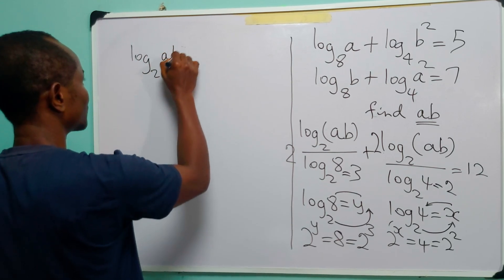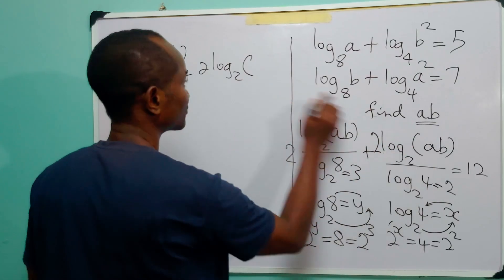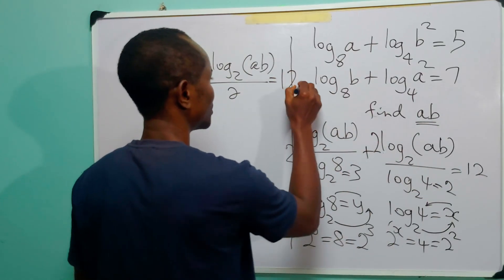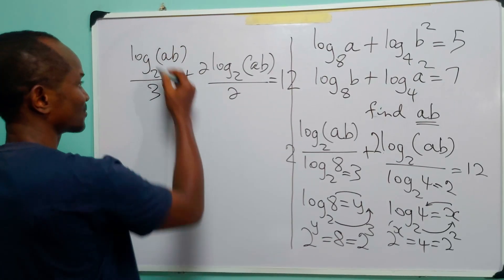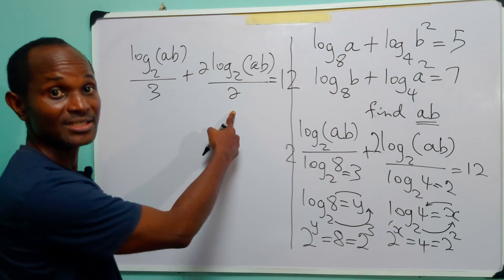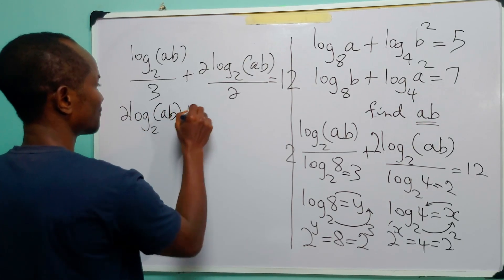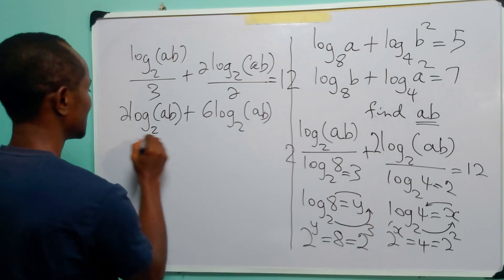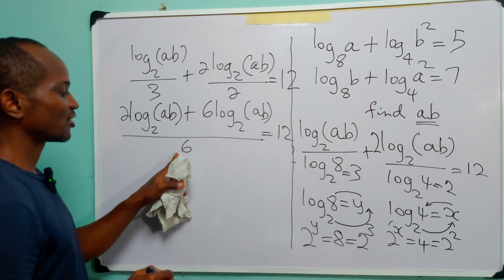This gives us log base 2 of ab divided by 3, plus 2 times log base 2 of ab divided by 2, is equal to 12. Combining these two fractions: 2 times log base 2 of ab plus 6 times log base 2 of ab, all divided by 6, is equal to 12.